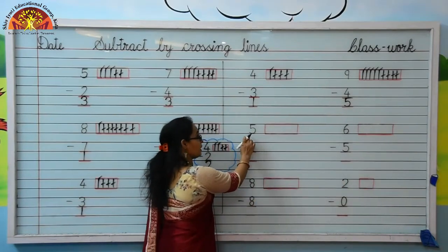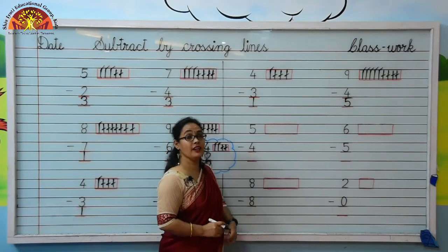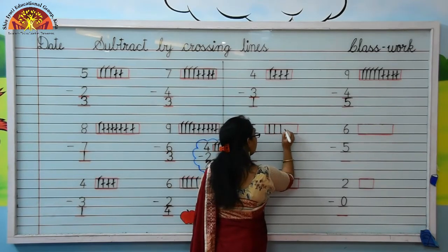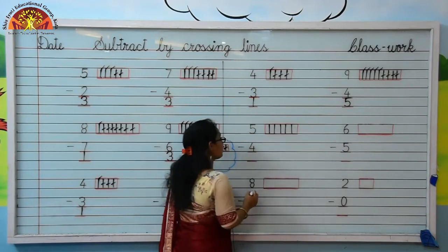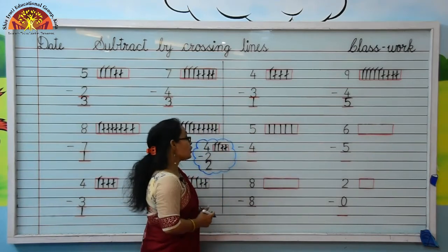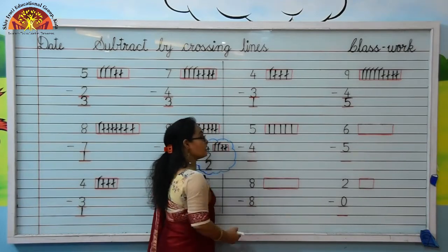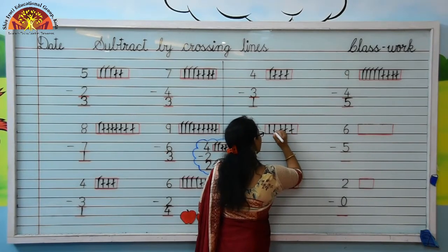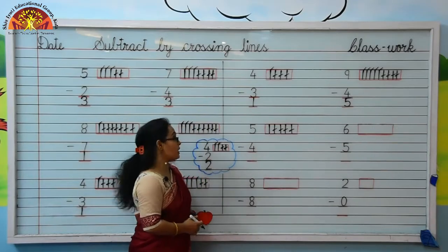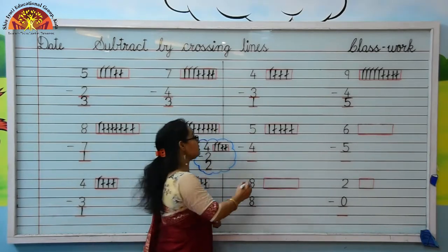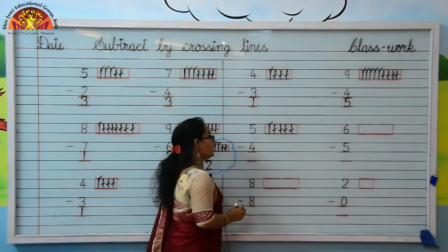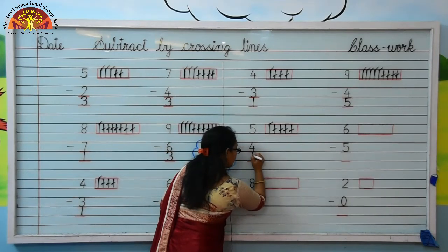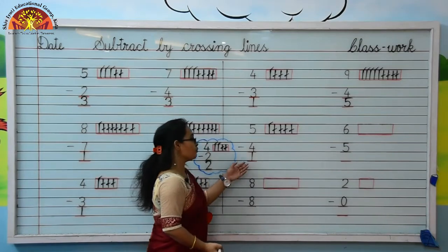Next number is 5. Kids, how many lines should I draw here? Yes, 5. Let's draw with me: 1, 2, 3, 4, 5. The downside is 4. Kids, we will cross 4 lines from 5 lines. Let's cross them: 1, 2, 3, 4. Kids, now you tell me how many lines are left. Let's count: 1. Yes, 1 is left there. So your answer is 1. Move to next.